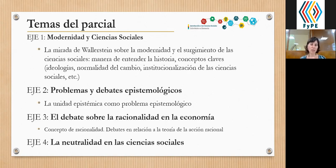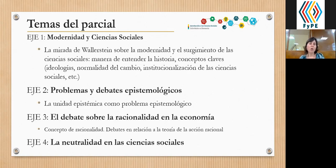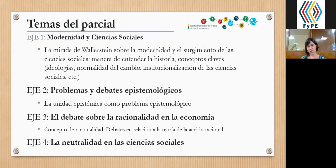En el caso del eje 2, solamente vamos a tomar uno de los problemas epistemológicos, que es el de la unidad epistémica. Lo que ustedes tienen que poder dar cuenta en el parcial es sobre cuál es el debate que aparece alrededor de la unidad epistémica en términos de problema epistemológico, y cuáles son las posiciones que toman cada una de las perspectivas epistemológicas que trabajamos en la materia: el positivismo y el interpretativismo. Cómo el tomar un posicionamiento sobre si existe unidad epistémica o pluralidad epistémica define maneras distintas de entender el proceso de construcción de conocimiento, y un posicionamiento epistemológico y metodológico diferente de cada una de estas perspectivas.